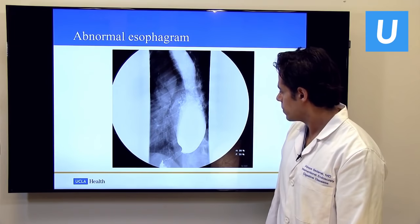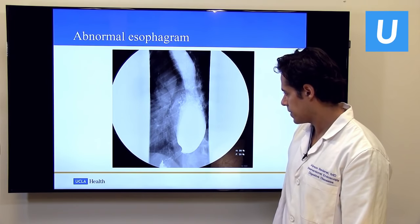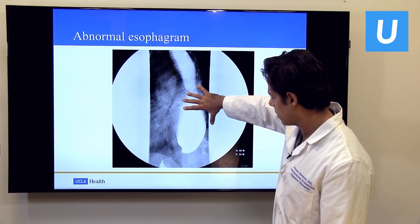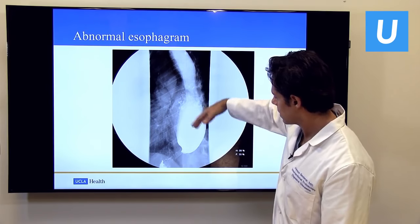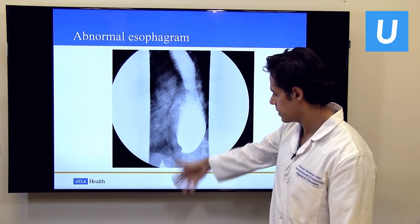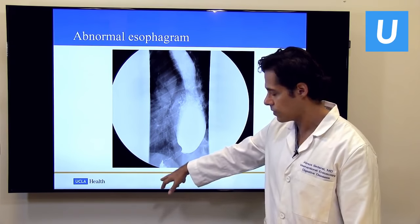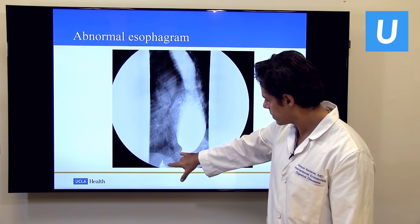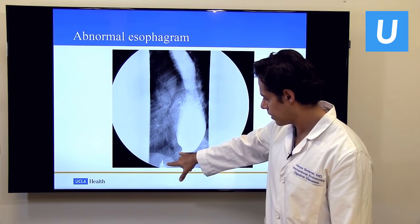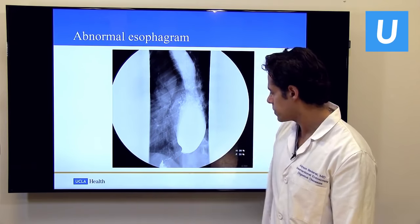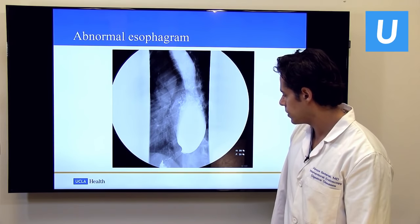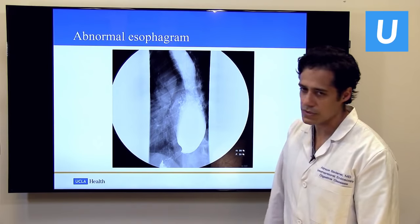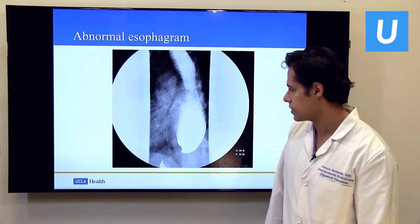This is an abnormal esophagram from a patient with achalasia. The esophagus is more dilated, the contrast tends to stay in the esophagus and only enters the stomach in a delayed way. It comes down to a pinch — the spastic lower esophageal sphincter preventing food and liquids from passing — and this narrowed point is called a bird's beak, which is somewhat typical of achalasia.